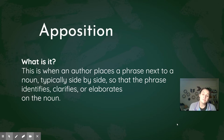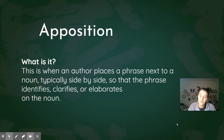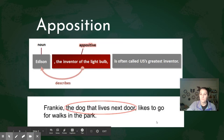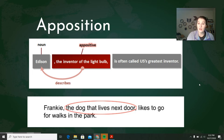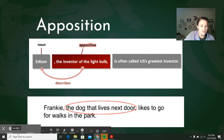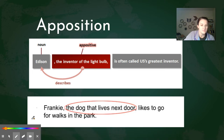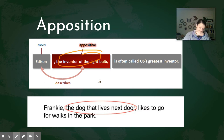So first, apposition — what is it? Here's a quick definition: this is when an author places a phrase next to a noun, or vice versa, typically side by side, so that the phrase either identifies, clarifies, or elaborates on the noun. Let's take a look at some examples. This sentence would be: 'Edison, the inventor of the light bulb, is often called the US's greatest inventor.' You could take out the red boxed portion — the phrase in the middle — and the sentence still works: 'Edison is often called the US's greatest inventor.'